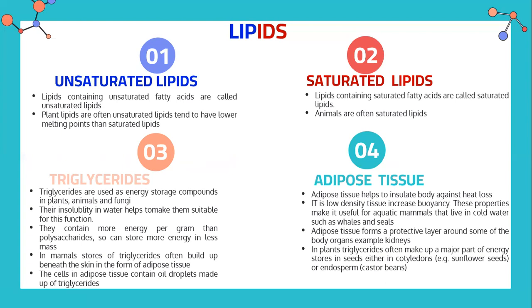In mammals, triglycerides are stored beneath the skin as part of adipose tissue. The cells in adipose tissue contain oil droplets made up primarily of triglycerides. Adipose tissue helps to insulate the body against heat loss. It is a low-density tissue which increases buoyancy — making it useful for aquatic mammals that live in cold waters, such as whales and seals. Adipose tissue also forms a protective layer around some organs, such as the kidneys.